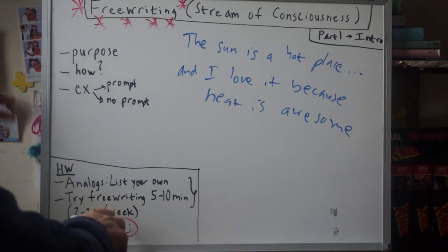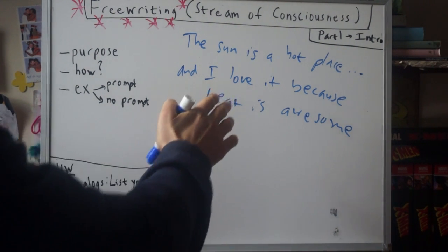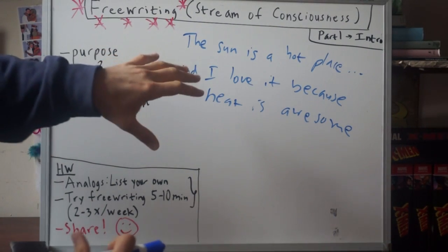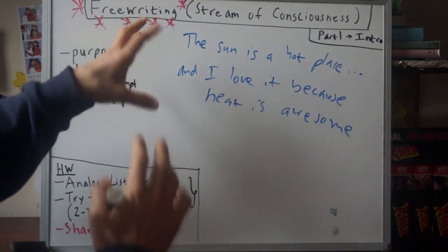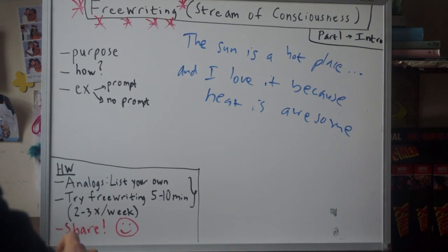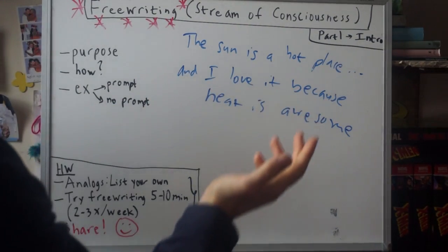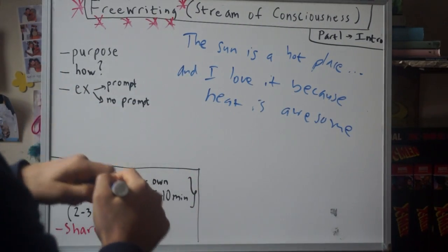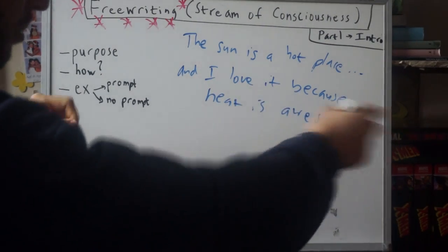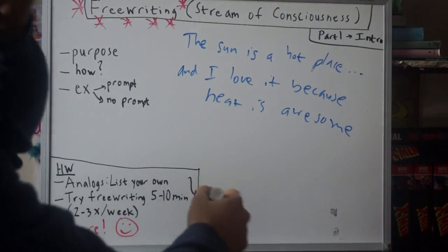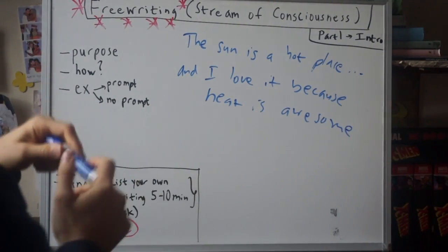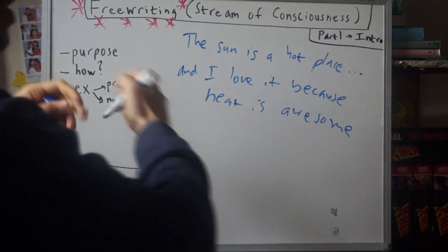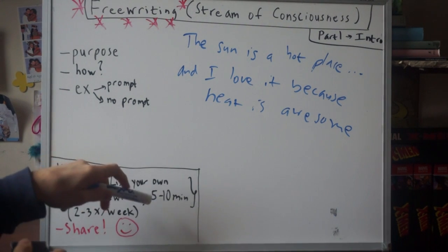Your homework will be to try free writing for five to ten minutes a few times a week — two to three times per week is recommended. You might find that in the beginning this is really difficult. In the next video I'm going to give you tips on how to work on this if you're having trouble, and how to know if you're doing it right. You can start with a prompt or without one — literally start from whatever comes to your head, whether that's something you saw earlier, or just 'I'm hungry.' Write very quickly, at a fast pace, non-stop until your time is up.